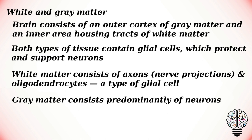The central nervous system can be roughly divided into white and grey matter. The brain consists of an outer cortex of grey matter and an inner area housing tracts of white matter. Both types of tissue contain glial cells which protect and support neurons. White matter mostly consists of axons, which are neuron projections, and oligodendrocytes, a type of glial cell, whereas grey matter consists predominantly of neurons.